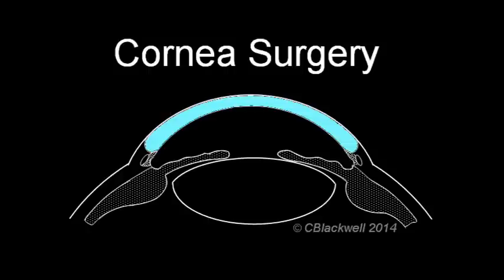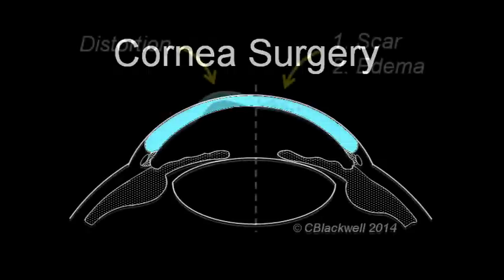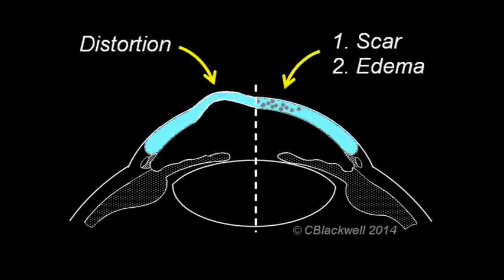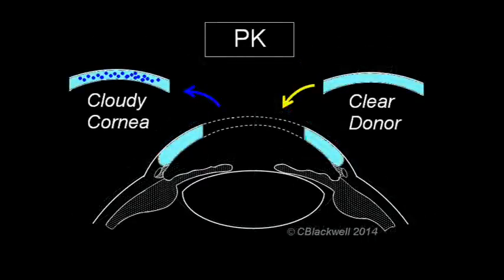In the next video, we are going to cover common surgeries of the cornea. First, if the cornea becomes cloudy or distorted, that can often be remedied by a corneal transplant.